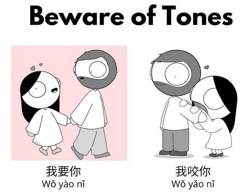You can kind of tell because the radical has a mouth to it. And 我要你 — I bite you.